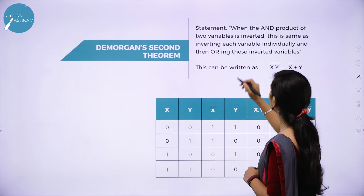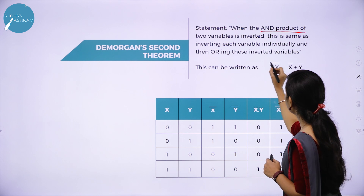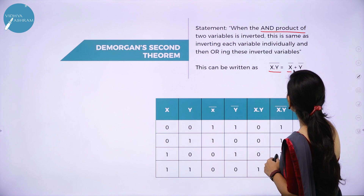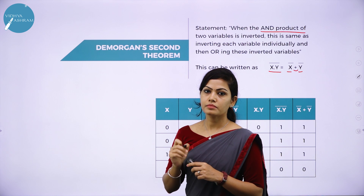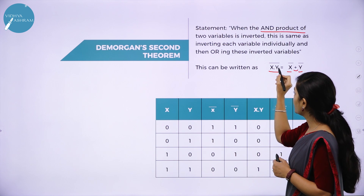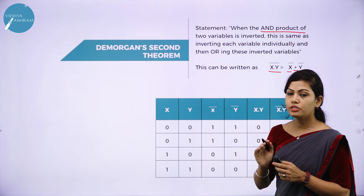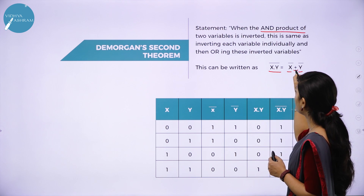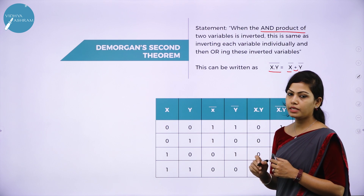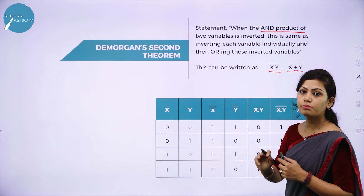De Morgan's second theorem states that when the AND product of two variables is inverted (complemented), this is the same as inverting each variable individually and ORing the inverted variables. The LHS represents a NAND gate with inputs x and y, whereas the RHS represents an OR gate with inverted inputs x̄ + ȳ. De Morgan's second theorem: (x·y)̄ = x̄ + ȳ.